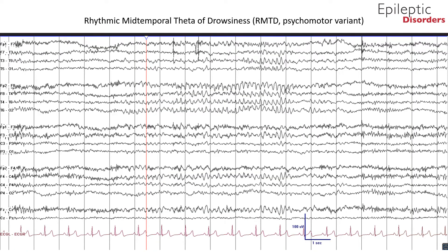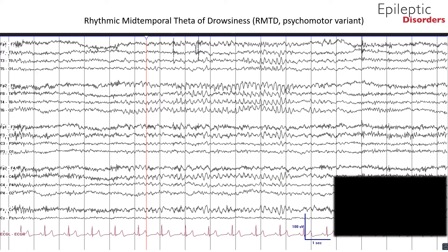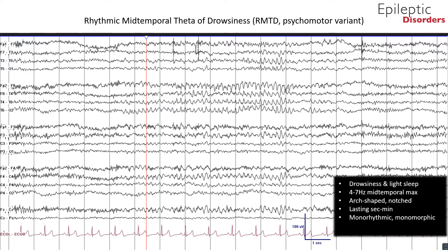Rhythmic mid-temporal theta of drowsiness is mostly seen during drowsiness and light sleep. It occurs in bursts or trains of rhythmic 5–7 Hz activity. RMTD is maximal in the mid-temporal leads T4 and T5, and may at times spread to the parasagittal regions or more posteriorly to the occipital-temporal regions. RMTD may be seen bilaterally or may be independent over the right or left side. Like most rhythmic variants, it is typically arc-shaped and is often notched. These notches may give the waves a somewhat sharply contoured appearance, which may be mistaken for sharp waves.